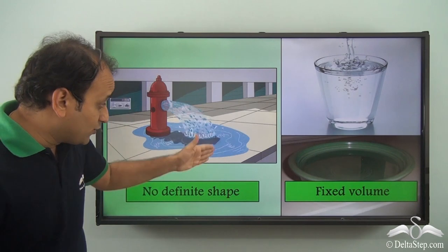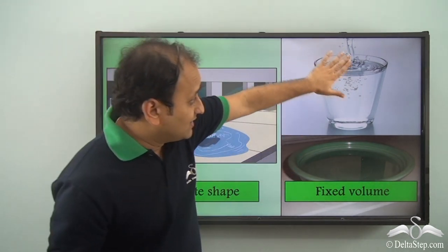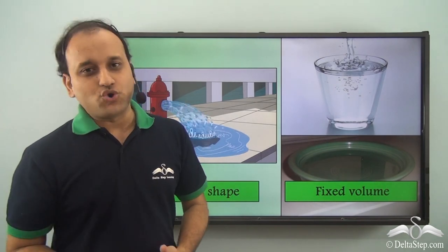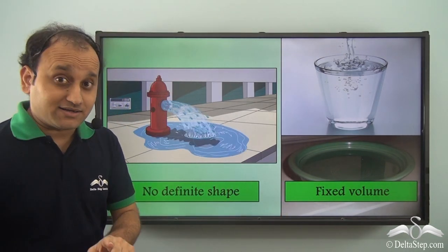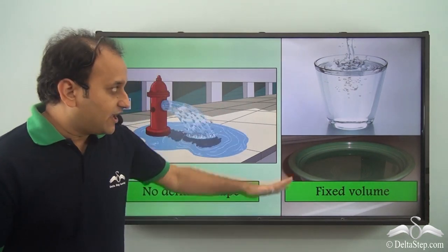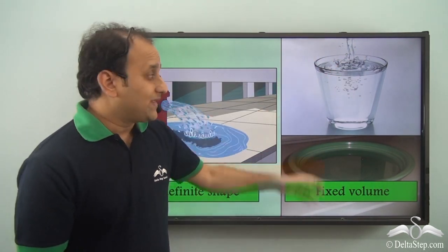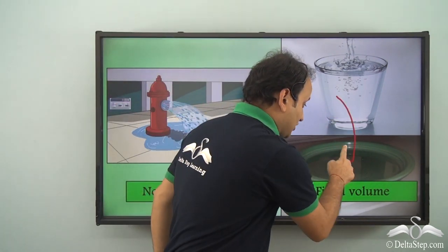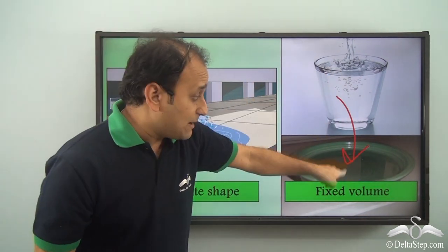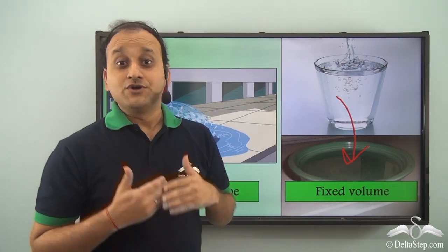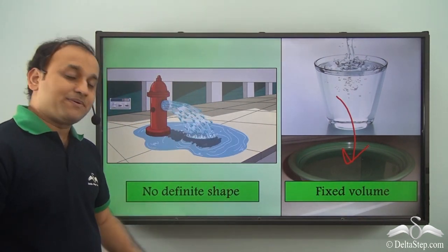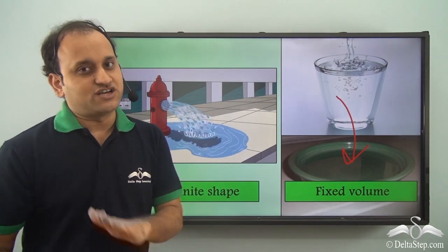So here as it is falling on the ground, it spreads out. While in the case of the glass and this container, it takes the shape of the container in which it is being stored. So it has no definite shape, but it has a definite volume. For example, if this container has one liter of water and you pour it into another container, even in that container it will be one liter of water. So the shape changed, but the volume did not change. Volume is always fixed in the case of liquids.